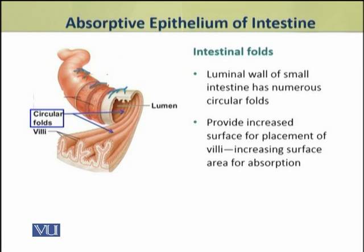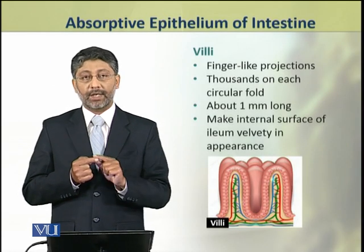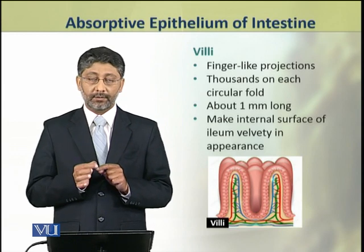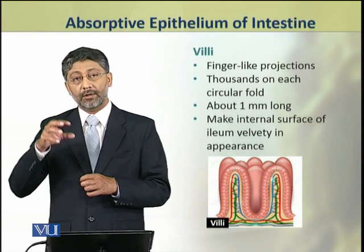The intestinal folds: if we see the luminal wall of small intestine, it has numerous circular folds. These folds provide increased surface for the placement of villi, which substantially increase the surface area for absorption. Villi are finger-like projections which are present in thousands of numbers on these circular folds.